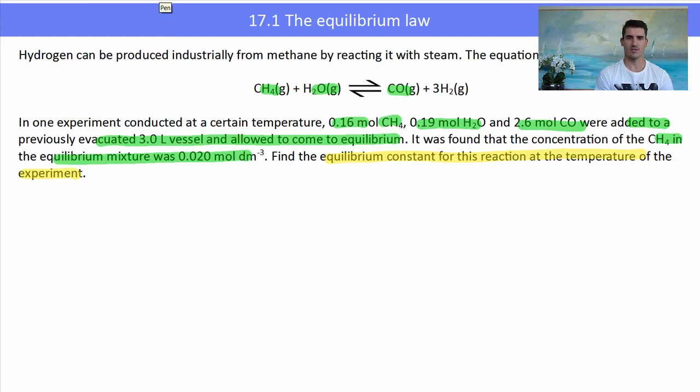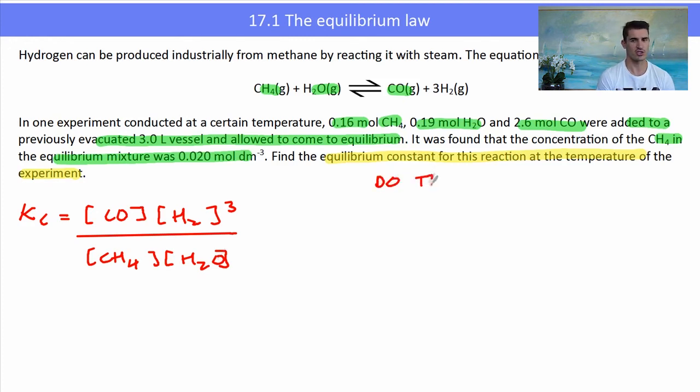The first thing I'm going to do is write my equilibrium expression, which will be [CO] × [H₂]³ over [CH₄] × [H₂O]. Now I've got to work out these values. I want you to go through and do the ICE table for me, and then I'm going to write up the values for the concentrations and you can check your answer. Do the ICE table now.